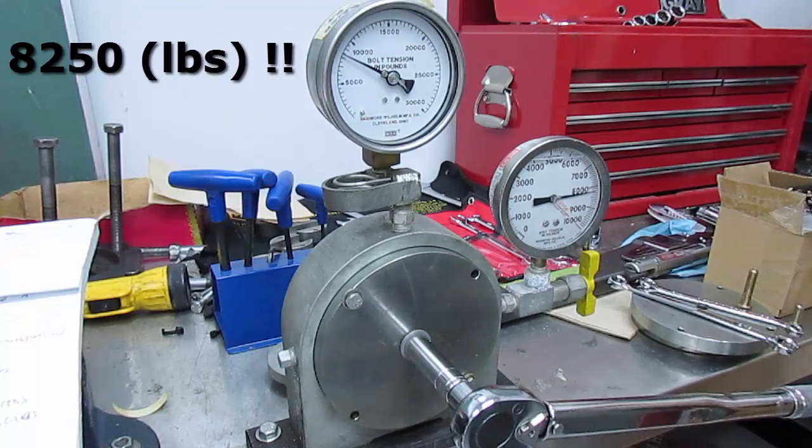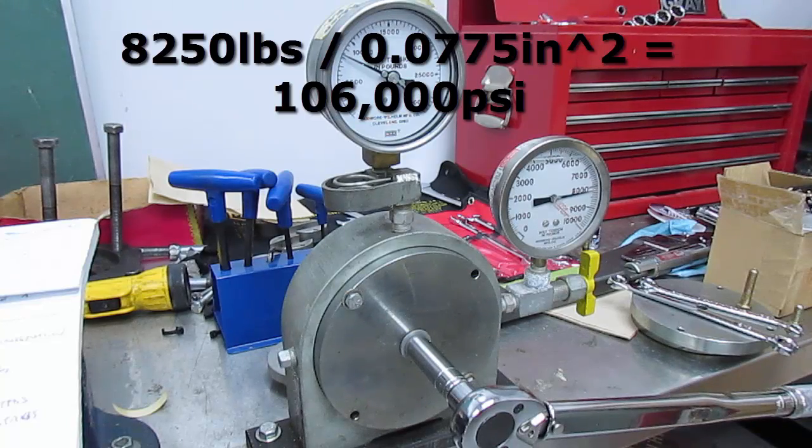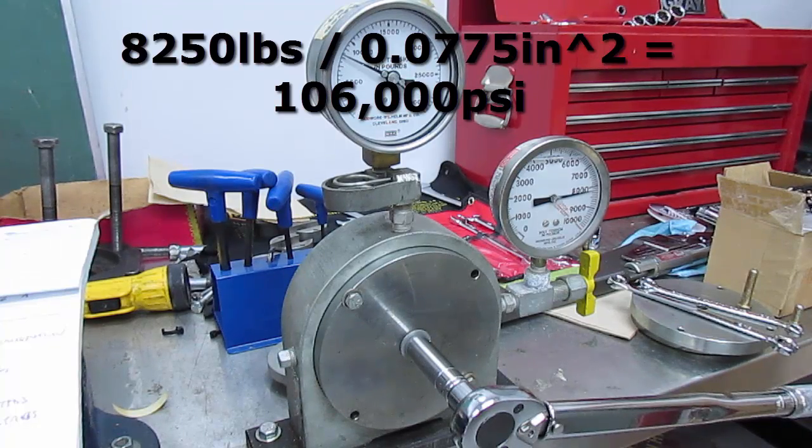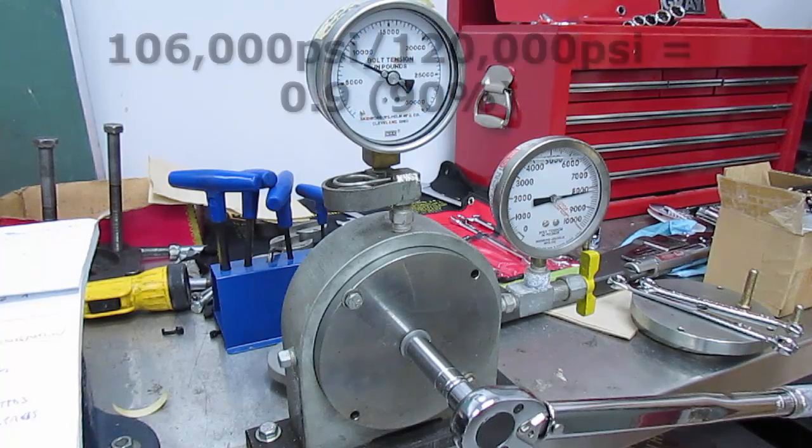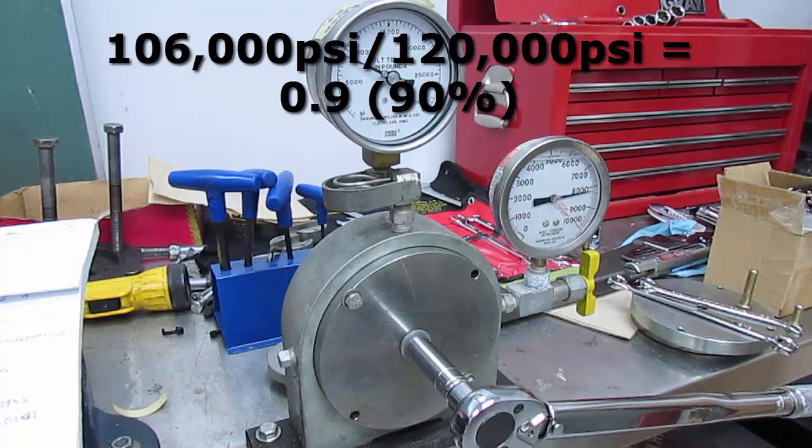So let's find out the percentage increase. Okay, using the same formula as earlier, we're going to take the 8250 pounds of preload, we're going to divide that by our tensile stress area which is 0.0775 inches. We get 106,000 psi. We are going to divide that by the 120,000 psi and we've reached almost 90% of its yield stress just by adding the lubricant.